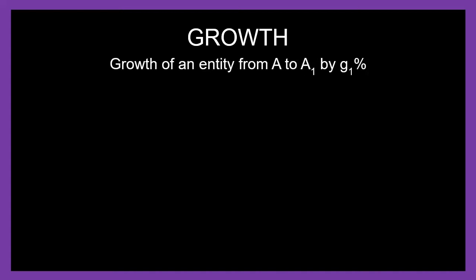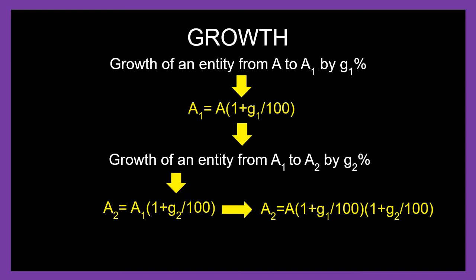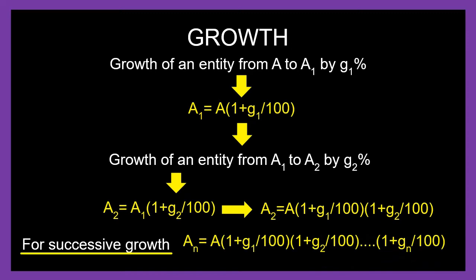Application of percentages — Growth: Growth of an entity A to A1 is similar to profit percentage. Hence A1 equals A into (1 plus G1 by 100), where G1 is the growth percentage in the first time period. For growth from A1 to A2 at growth percentage G2, we get A2 equals A into (1 plus G1 by 100) into (1 plus G2 by 100). The general formula for growth over time is: An equals A into (1 plus G1 by 100) into (1 plus G2 by 100) ... into (1 plus Gn by 100).